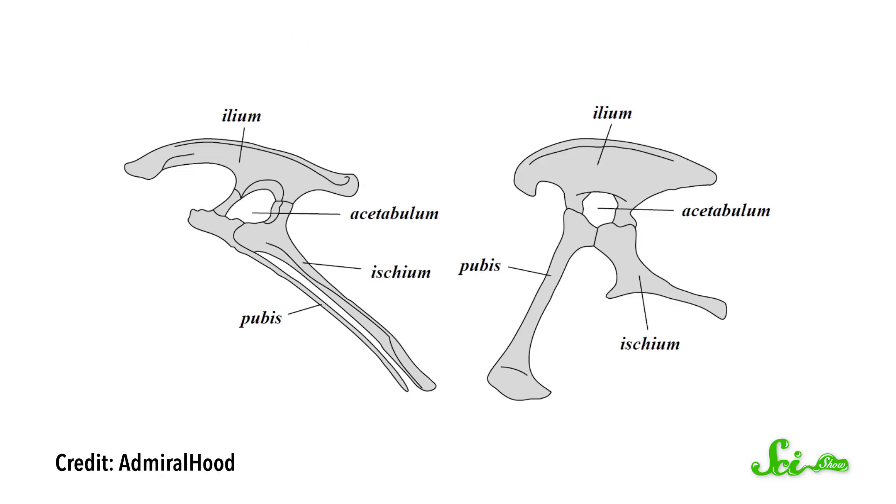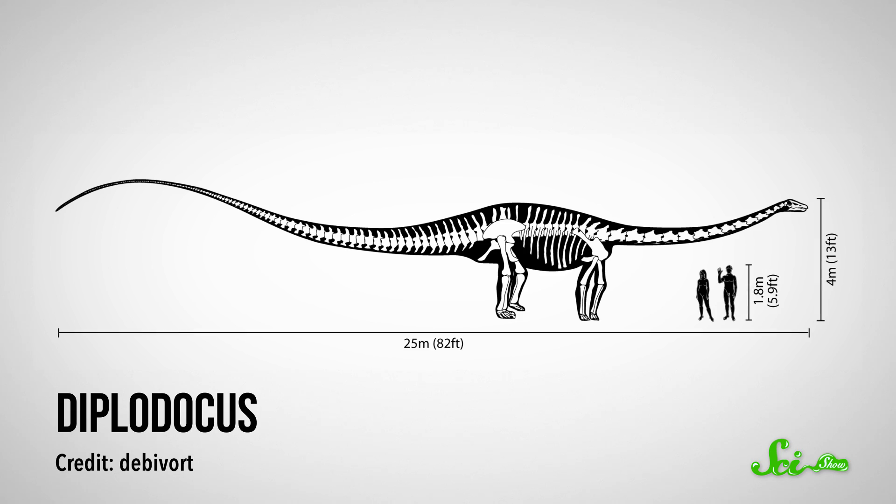A paper from March this year defies a 130-year-old widely used classification system that divides dinosaurs up into two groups, based on the orientation of a bone in the hip called the pubis. If the pubis points tailwards, like in Triceratops and Stegosaurus, it's an Ornithischian. But if the pubis faces to the front, it's a Saurischian. This group includes sauropods like Diplodocus, and the theropods like T-Rex and Velociraptor.